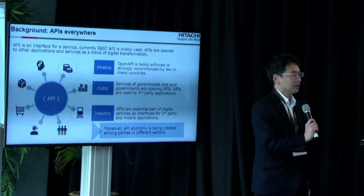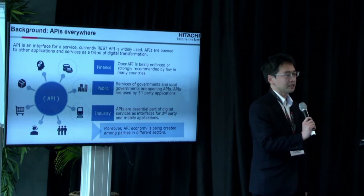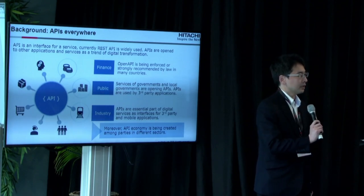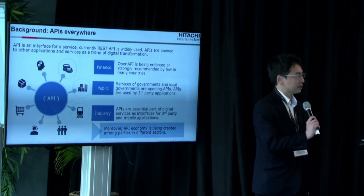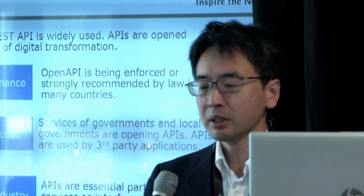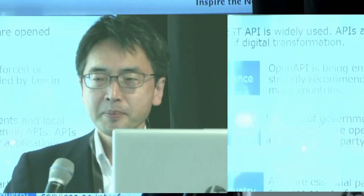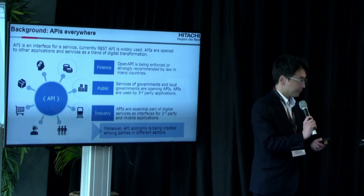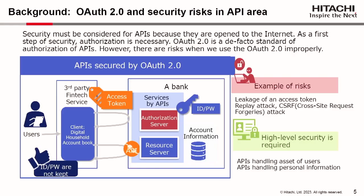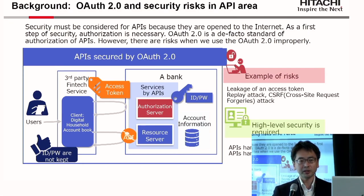This is a background on API. An API is an interface for a service. It is usually a RESTful API. APIs are opened to other applications and services, as a trend of digital transformation, such as in the financial sector, public sector, and industry. In Cloud Native, microservices are a kind of API. Security must be considered for APIs because they are opened to the internet. As a first step of security, authorization is necessary.